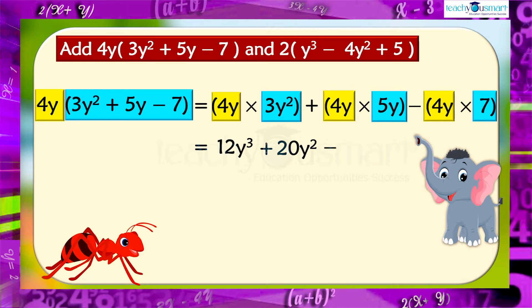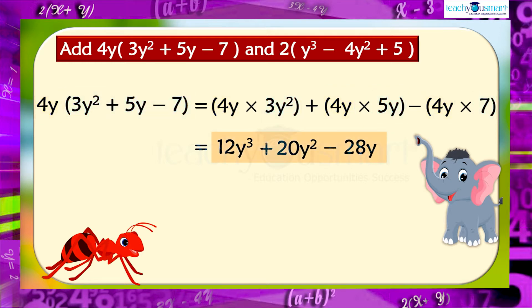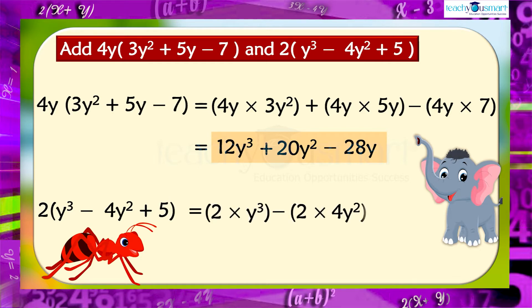The second expression is 2 multiplied by y cubed minus 4y squared plus 5, which equals 2y cubed minus 8y squared plus 10.